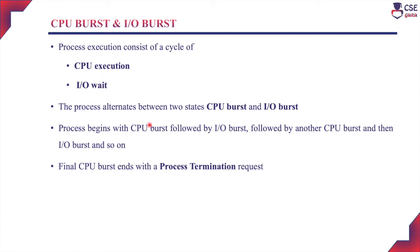The process alternates between two states: CPU burst and I/O burst. Normally, the process begins with a CPU burst, followed by an I/O burst, then another CPU burst, and so on. Initially when the process is assigned to the CPU it starts with the CPU burst, and whenever I/O service is required it goes to the I/O wait state to complete its I/O burst.